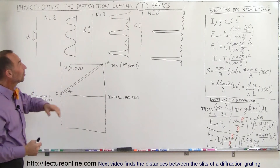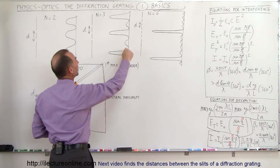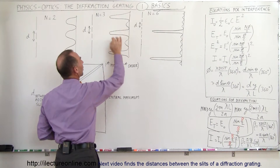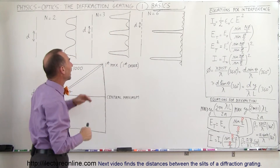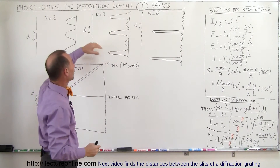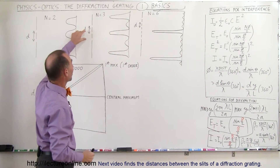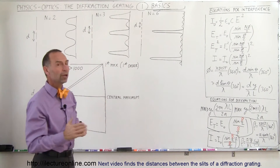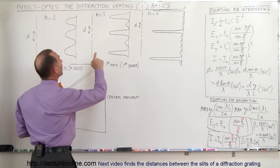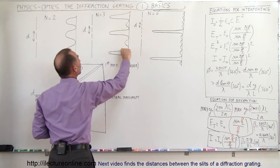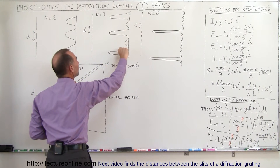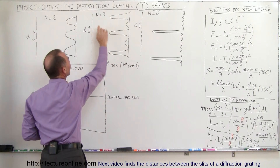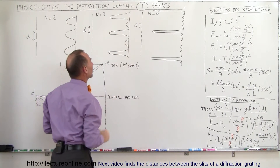With three slits we saw that we had these larger maxima and intermediary maxima which were much smaller. Again the separation between the maxima depended upon the separation distance of the slits — closer together meant farther apart and so forth. The width of each maxima was not as wide as with two slits, and we had that intermediary in between.